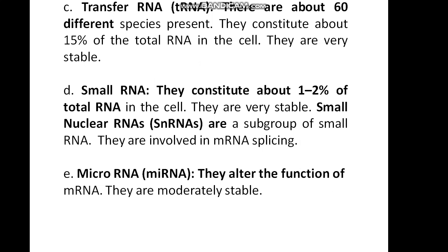Third, transfer RNA, tRNA. There are about 60 different species present. They constitute about 15% of total RNA in the cell and are very stable. Fourth, small RNA. They constitute about 1 to 2% of total RNA in the cell and are very stable.